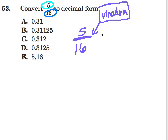5 over 16 is saying 5 divided by 16. So if you want to turn this fraction into a decimal form, one easy way to do that is just to divide.